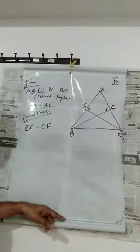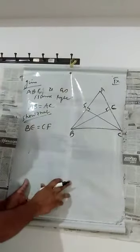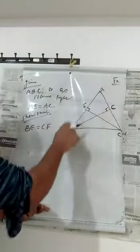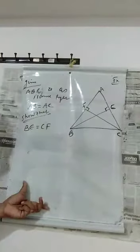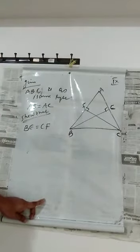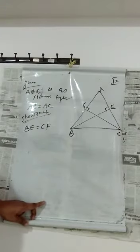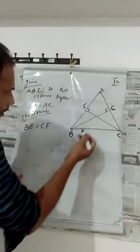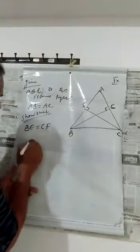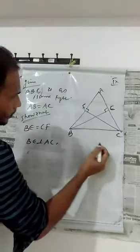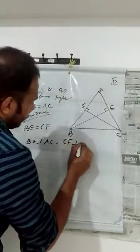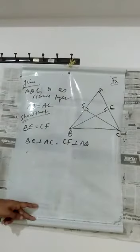So what we are going to do is prove that the two triangles are congruent. Also given: BE is perpendicular to AC, and CF is perpendicular to AB — both are given because the altitudes are given.